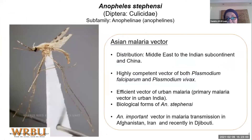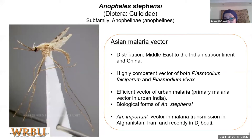Our session today is focused on Anopheles stephensi. It is an Asian malaria vector whose distribution spans the Middle East to the Indian subcontinent and China. It is a highly competent vector of both Plasmodium falciparum and Plasmodium vivax, and an efficient vector of urban malaria — a key challenge if it becomes invasive in new countries. There are biological forms of Anopheles stephensi, and it is also an important vector in Afghanistan and Iran, and has recently become established in Djibouti.